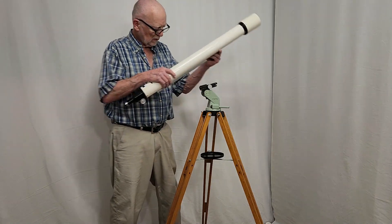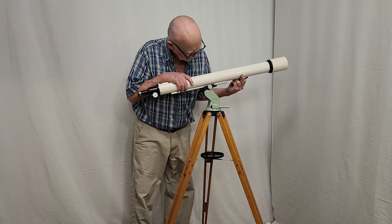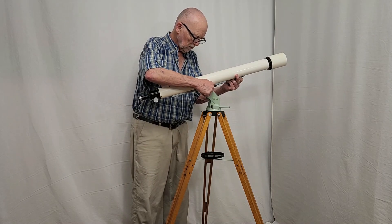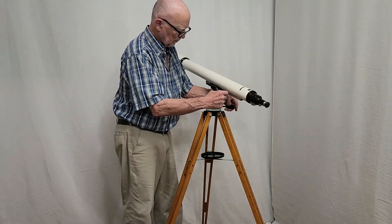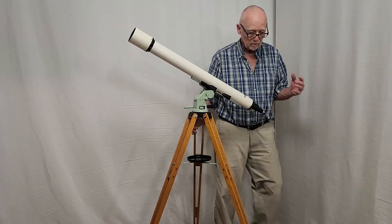These are the slow motion knobs. We mount the OTA on here. We're pretty much good to go.